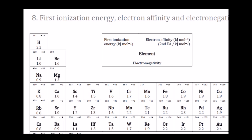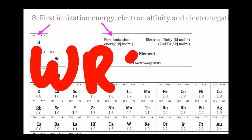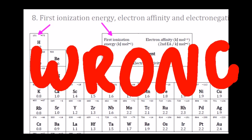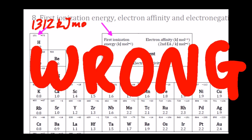Table 8, first ionization energy — and that's wrong. That's completely wrong. It should be 1,312 kilojoules per mole. First ionization energy is defined as the energy required to remove one mole of electrons from one mole of gaseous atoms.